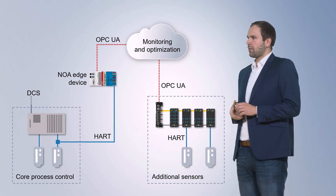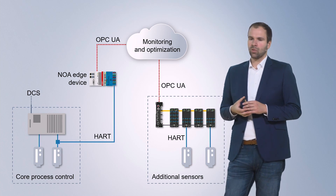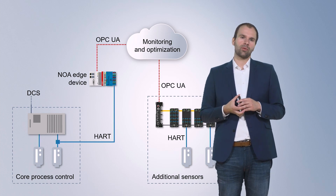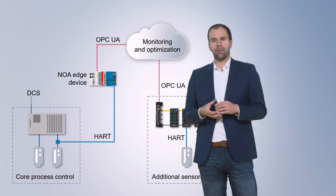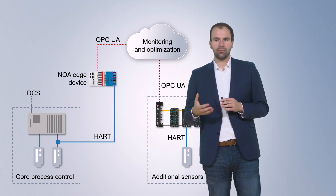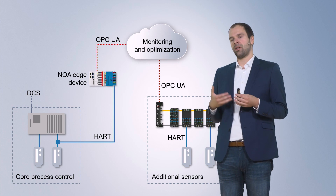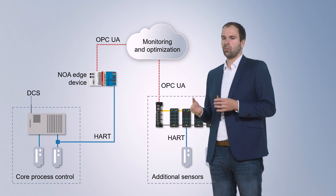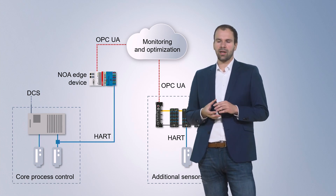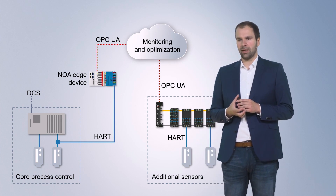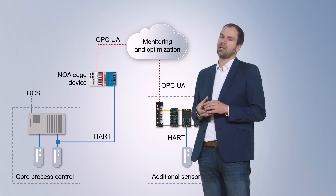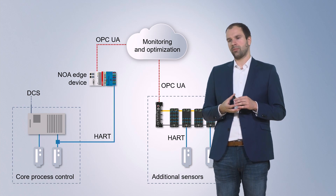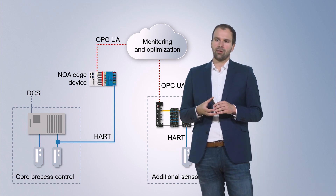Looking at the devices in the system, the existing DCS system connects to the field devices. The vast majority of process instrumentation uses the HART protocol. Often, only the 4 to 20 milliamp signal is read by the DCS system, and all additional information inside those smart devices is lost. With the Edge device, we can connect to the HART interface and read all further information. The Edge device establishes the HART communication, reads the data, converts it if necessary, and maps it to the NOA information model so the data becomes available through the OPC UA server.